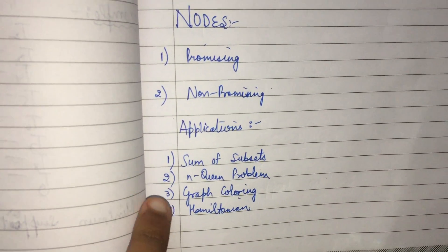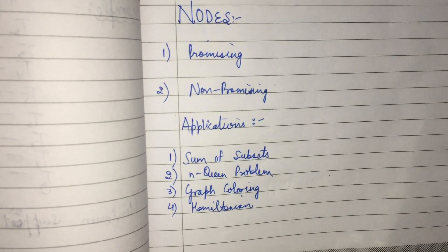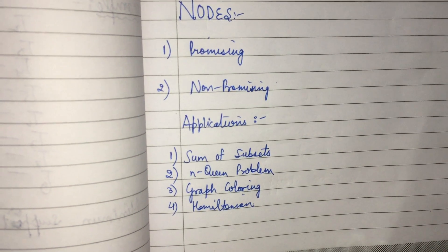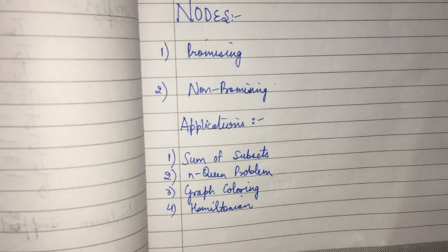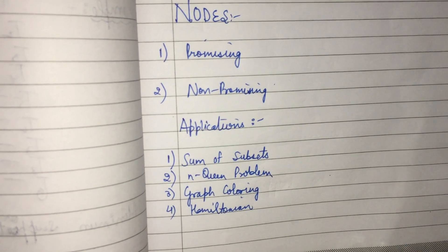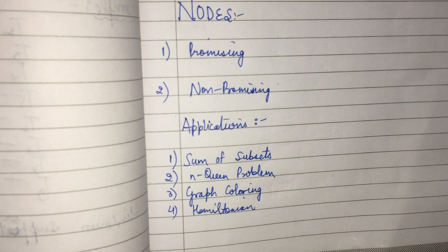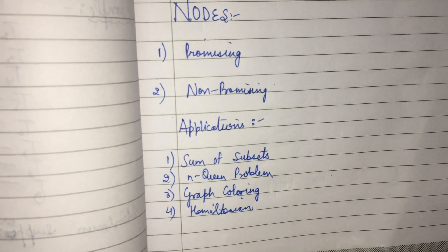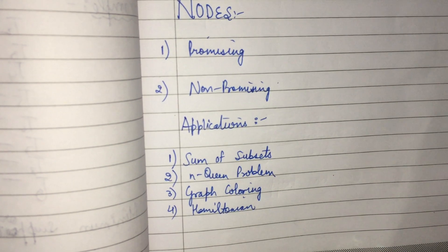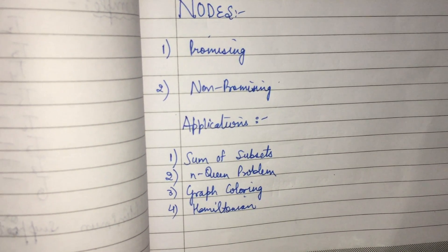There are four applications of the backtracking algorithm design technique: the sum of subsets, the N-queen problem, graph coloring, and the Hamiltonian circuit. We will discuss these problems one by one in the coming presentations. Thank you for watching this introduction to backtracking — do like, share, and subscribe, and for any queries you can mail or comment below.